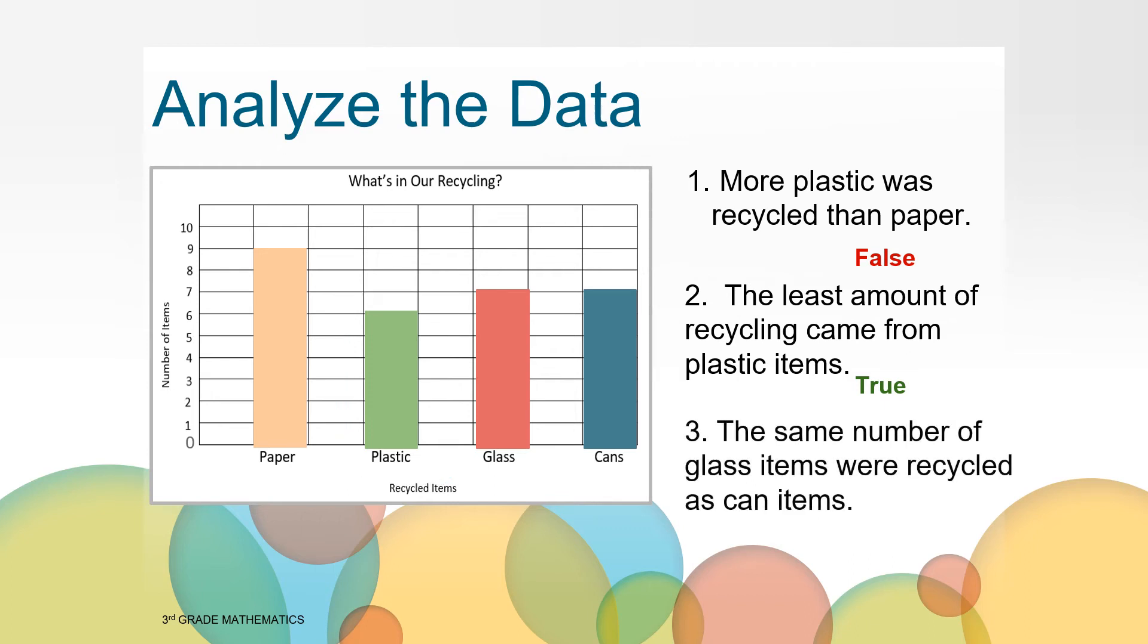The last statement is the same number of glass items were recycled as can items. Is this true or false? Yes, this statement is true. Prove how you know this by using data in the bar graph to explain your thinking. You are correct. The bars for both glass and cans are equal in height. Both show seven items were collected in each category. So this statement was true.